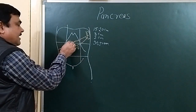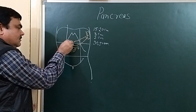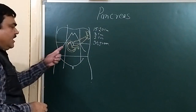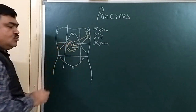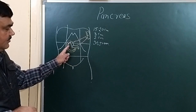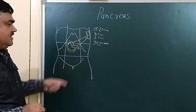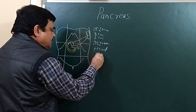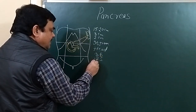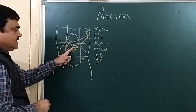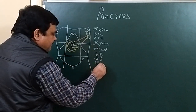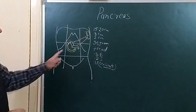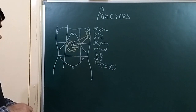The four parts are: head, neck, body, and tail. The head has three borders — superior border, inferior border, and right border — and two surfaces. It also has one process, which is known as the uncinate process.